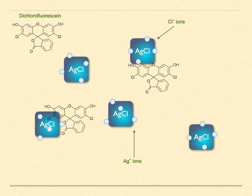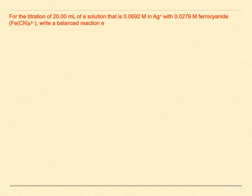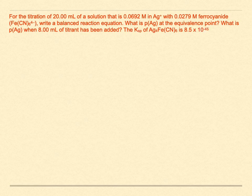As far as examinations go, it's not likely that you would encounter a question asking you to create a whole titration curve — whether precipitation, acid-base, or whatever. You might, however, likely run into a question asking you to calculate a value at a certain point in the titration. For example, for the titration of 20 milliliters of a solution that is 0.0692 molar in silver ion with 0.02793 molar ferrocyanide: write a balanced reaction equation, what is PAg at the equivalence point, and what is PAg when 8 milliliters of titrant has been added?